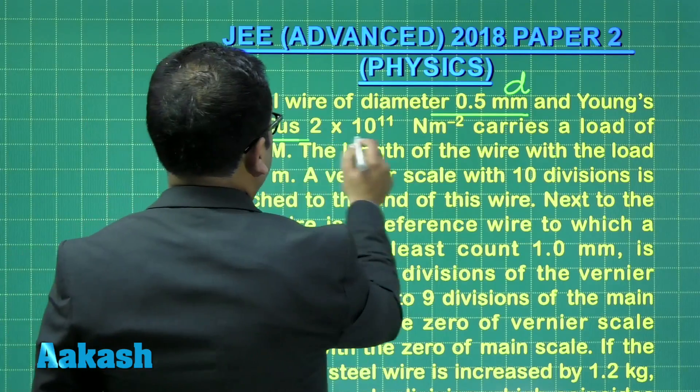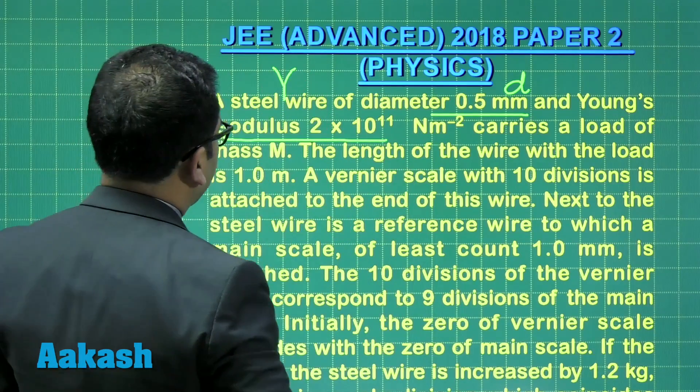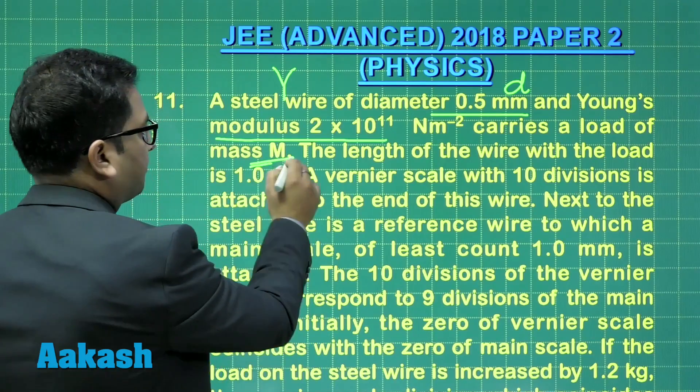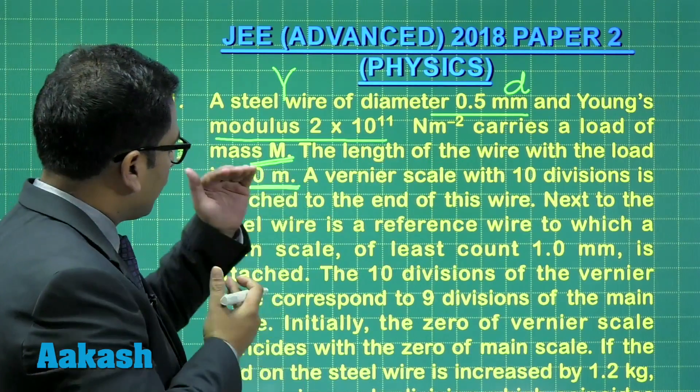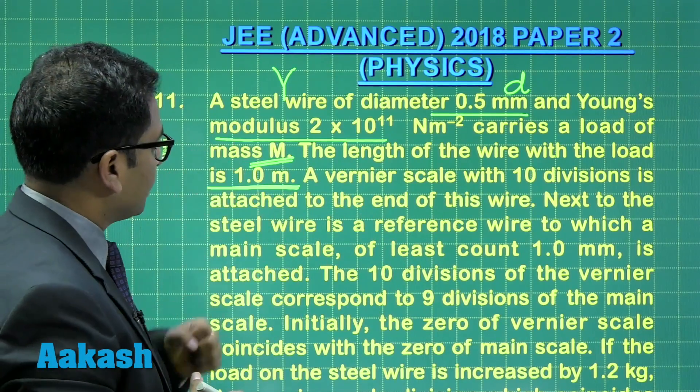And the Young's modulus has also been given, that's Y. It carries a load of mass M, and the length of the wire with the load is this much. That means the original length plus the elongation is 1 meter.